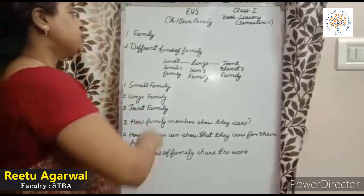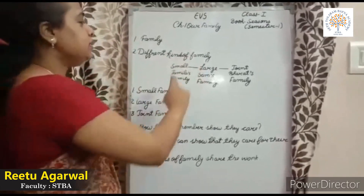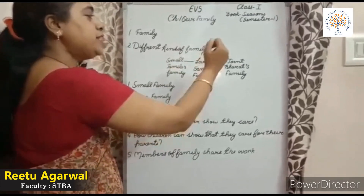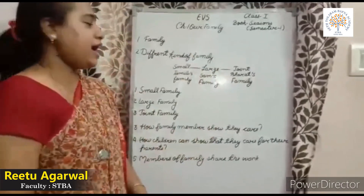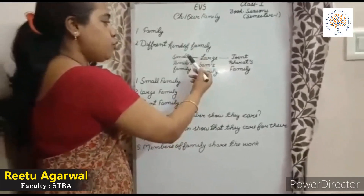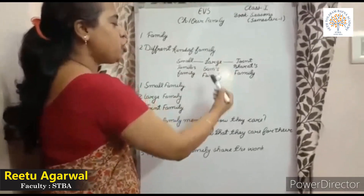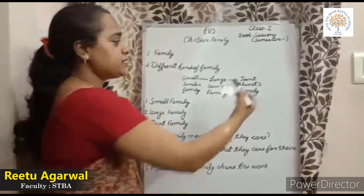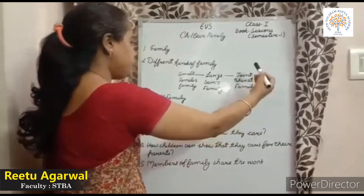Now, there are three kinds of family: small family, large family, and the third one is joint family. Jamila is from a small family, Sam is from a large family, and Bharat is from a joint family.